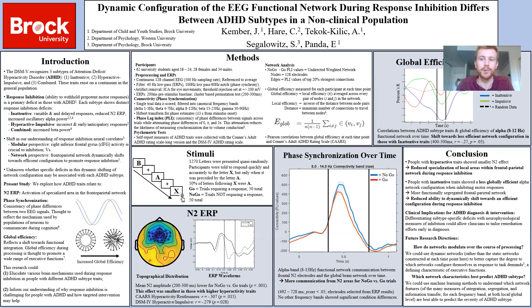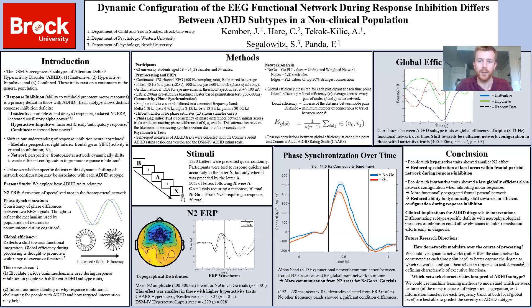This study looked at 62 university students from a non-clinical population aged 18 to 24. Standard pre-processing steps were applied to the 128-channel EEG. We looked at PLI — phase lag index — as a measure of communication between areas. PLI measures the consistency of phase differences between two signals across trials, and notably it attenuates any activity with a phase difference of 0, π, or 2π, to attenuate any activity that might have occurred only as a result of volume conduction from a single source. The psychometric tests given were self-report measures of ADHD traits measured by both the CARS rating scale and the DSM-4 rating scale. From PLI, we created undirected weighted networks using the 128 sensors as nodes and the PLI values as edges.